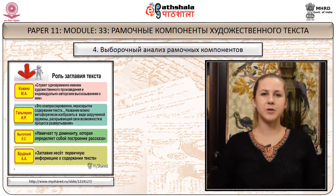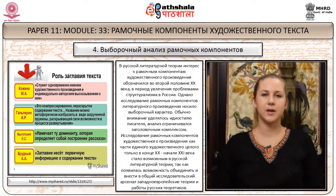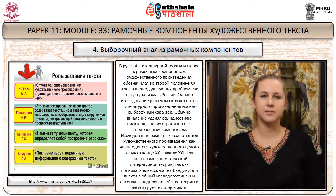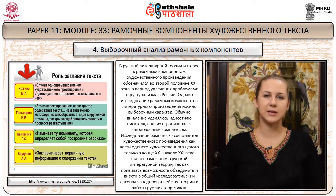Выборочный анализ рамочных компонентов. В русской литературной теории интерес к рамочным компонентам художественного произведения обозначился во второй половине XX века, в период увлечения структурализмом. Однако исследование носило выборочный характер: внимание уделялось стилю писателя, анализ ограничивался заголовочным комплексом. Рассмотрение рамочных компонентов как части единого художественного целого стало возможным лишь в конце XX – начале XXI века, когда появилась возможность объединить западноевропейские теории и работы русских теоретиков.